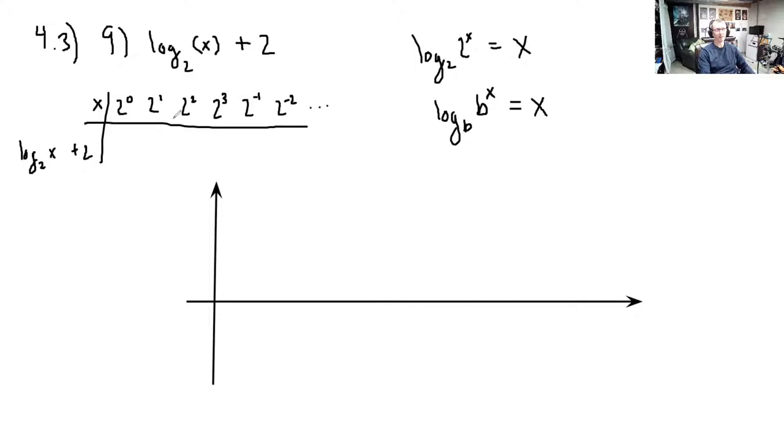So these values for our table are extremely easy to calculate. Log base 2 of 2 to the 0 is 0. Plus 2 gives us 2. Log base 2 of 2 to the 1st is 1. 1 plus 2 is 3. Log base 2 of 2 to the 2nd is 2. 2 plus 2 is 4. We see this nice little thing here. 2, 3, 4. What do you think the next one's going to be? Log base 2 of 2 to the 3rd is 3. It's just the power. 3 plus 2 is 5.